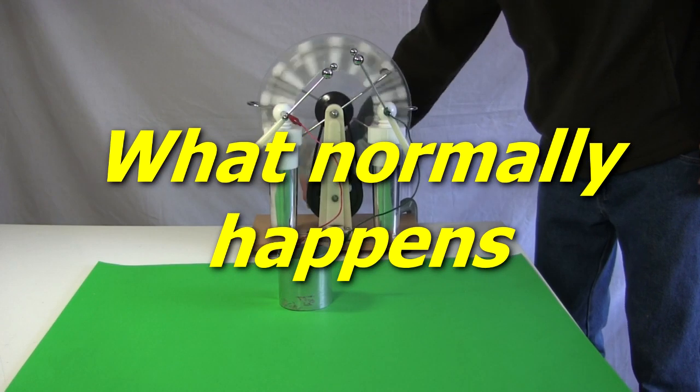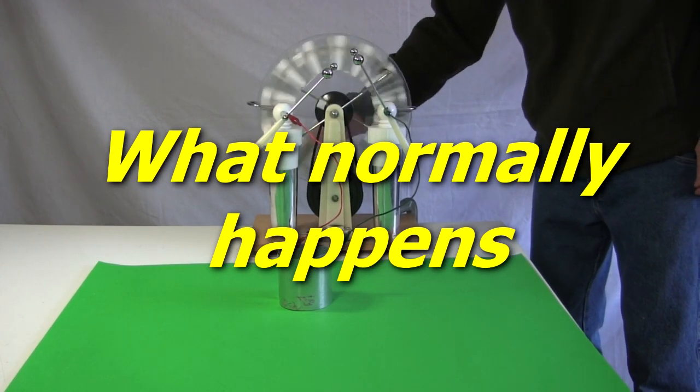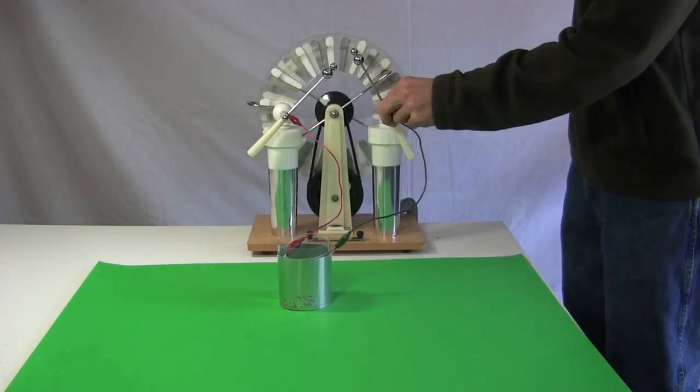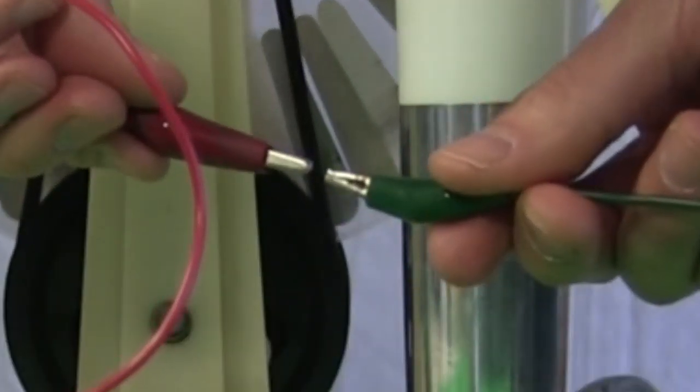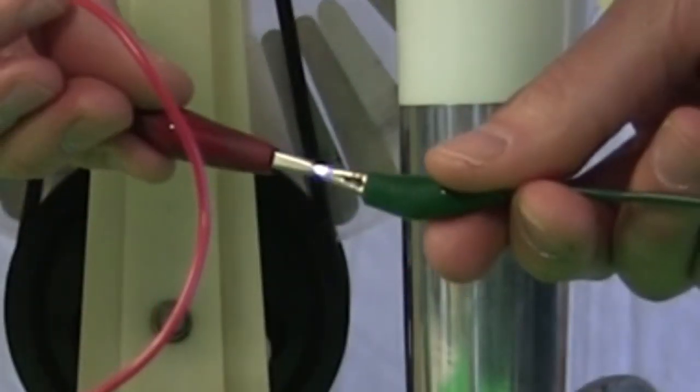First, to prove it works as a normal capacitor, I charge it up here with the Wimshurst machine. I disconnect it from the Wimshurst machine, and then I discharge it. From the spark you can see that the capacitor was in fact charged.